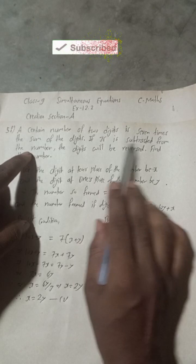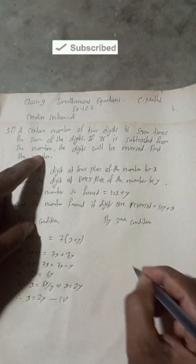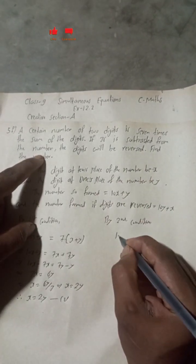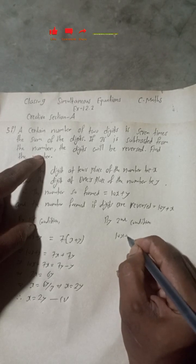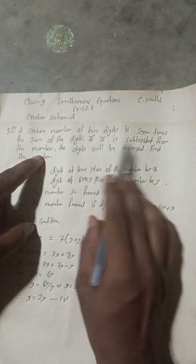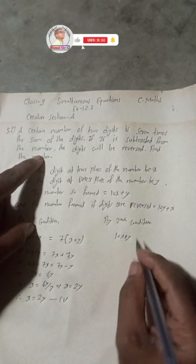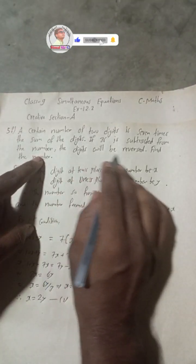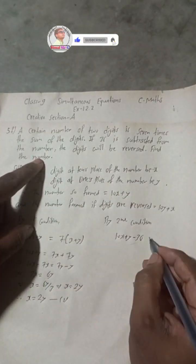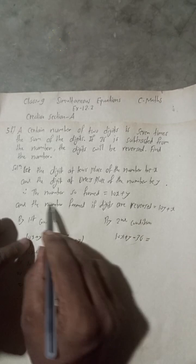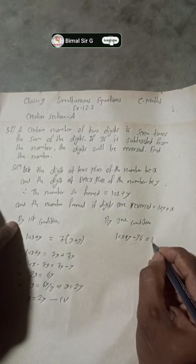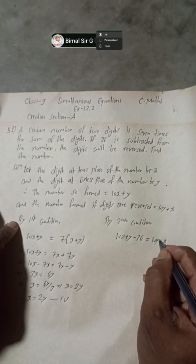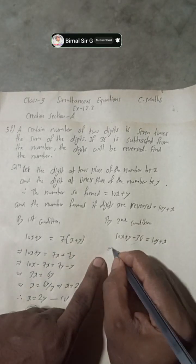By the second condition: if 36 is subtracted from the number, so our number 10x + y minus 36 equals the reversed number 10y + x. This is our second condition.